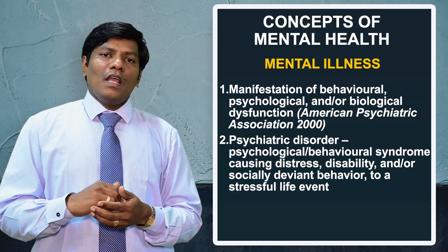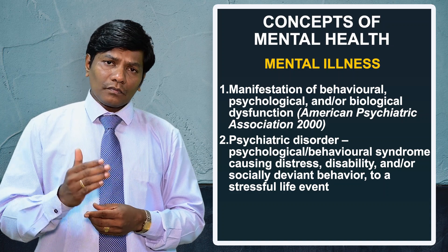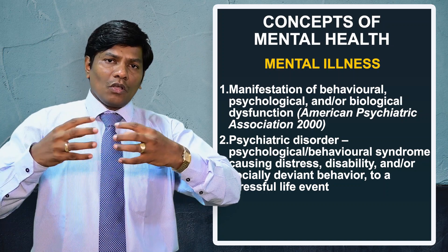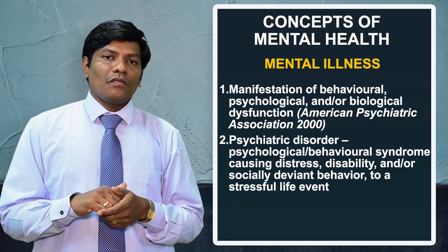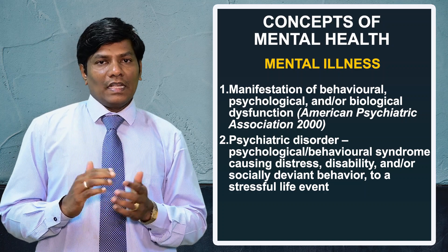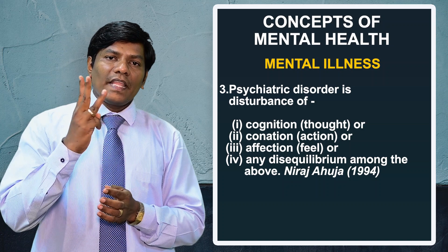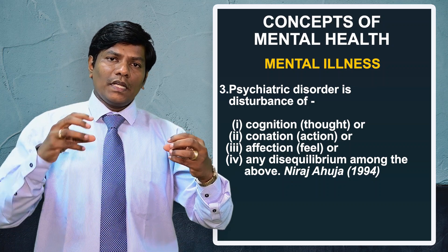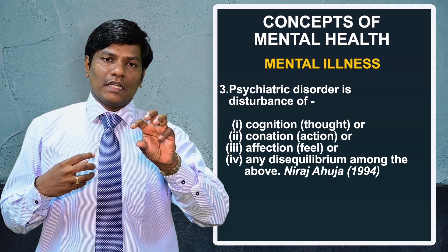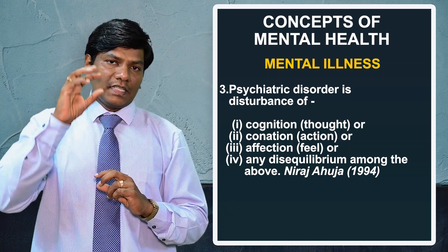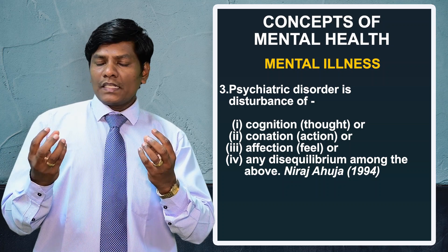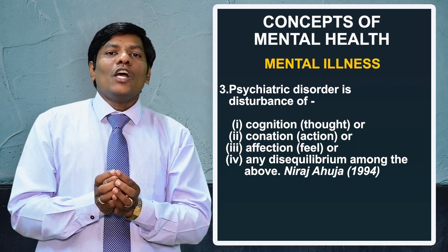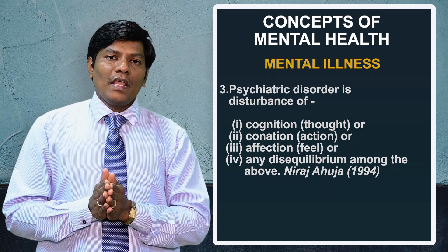According to the WHO, mental illness is defined as a complete state of physical, mental, social, spiritual, and economical well-being that is disturbed within one's environment. There are three important functions in psychiatry: cognition (thinking), behavior (acting), and affection (feeling). Any disturbance or disequilibrium among these three is known as a psychotic disorder, as described by Niraj Ahuja.